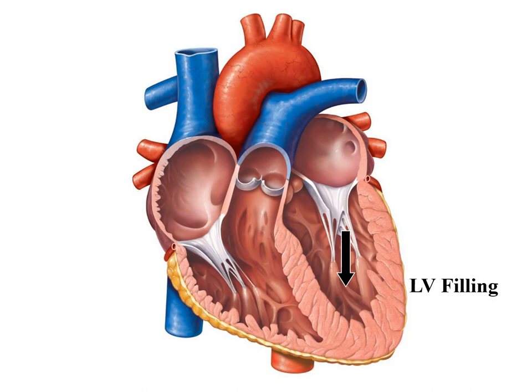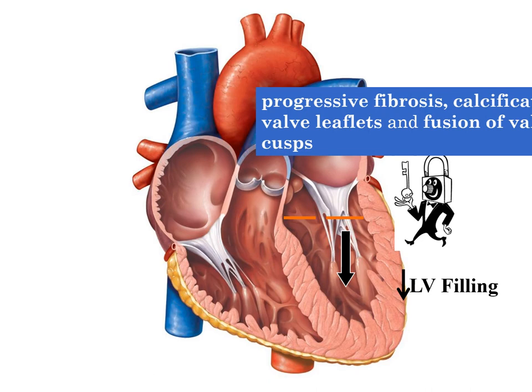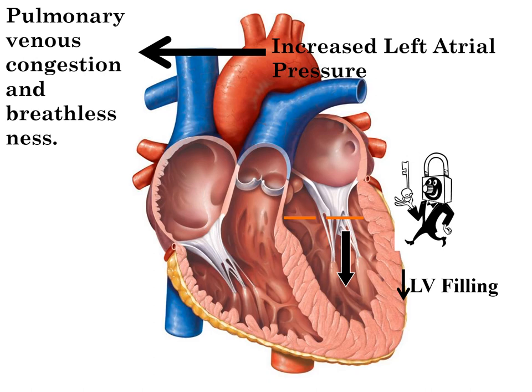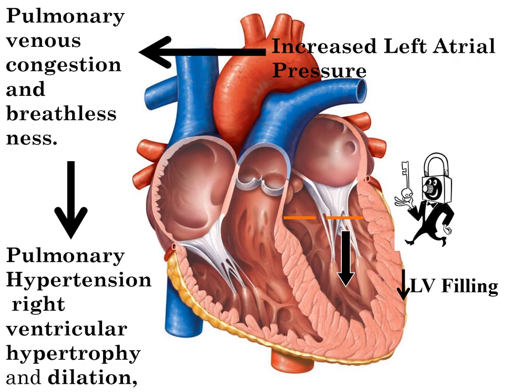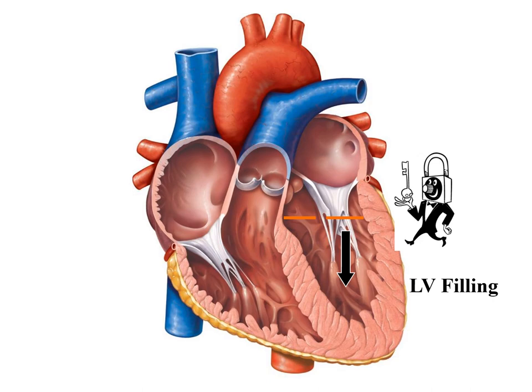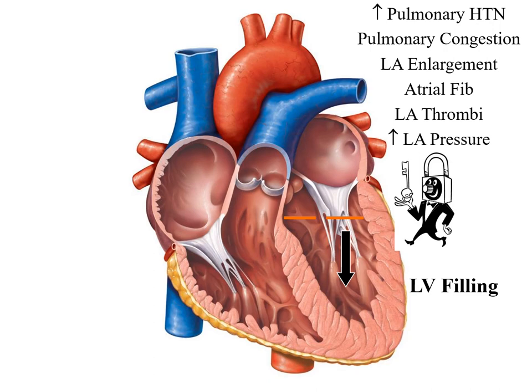To summarize the pathophysiology: there is decreased left ventricular filling due to progressive fibrosis, calcification, and fusion of valve cusps. This leads to increased left atrial pressure, increased pulmonary venous congestion and breathlessness, pulmonary hypertension, right ventricular hypertrophy, and signs and symptoms of right heart failure. Pulmonary hypertension and left atrial enlargement lead to atrial fibrillation.